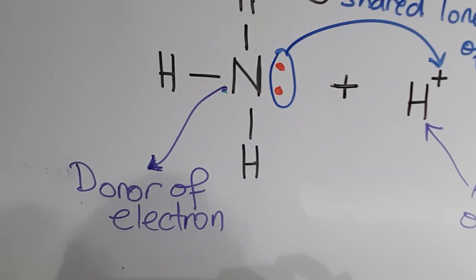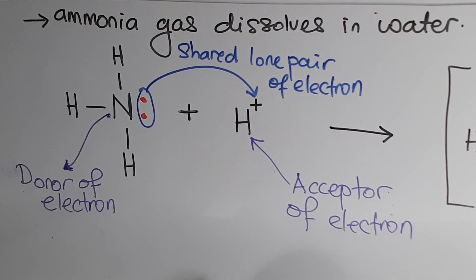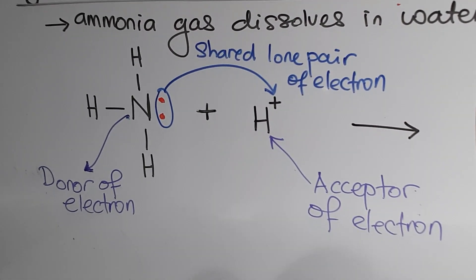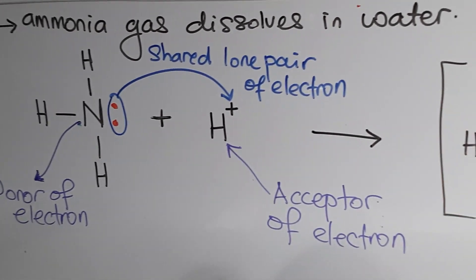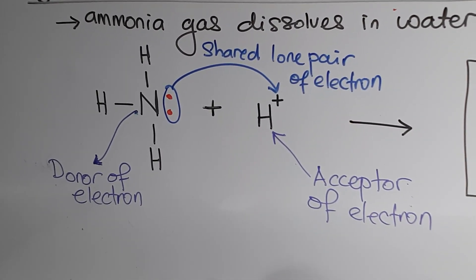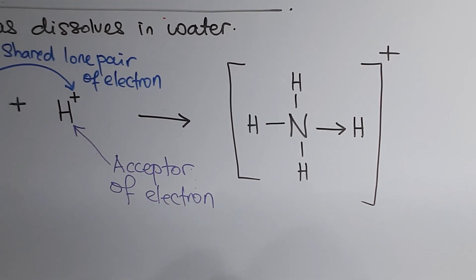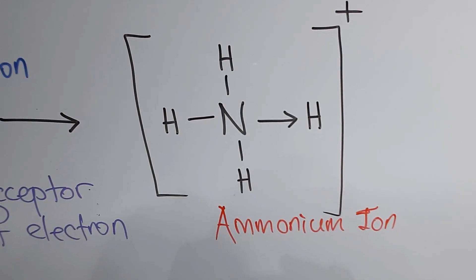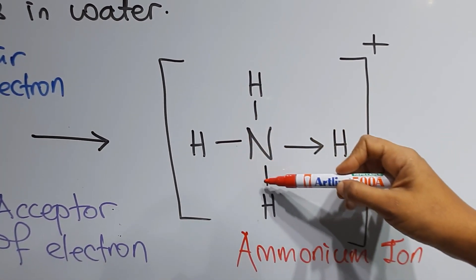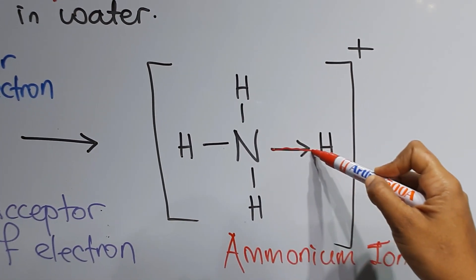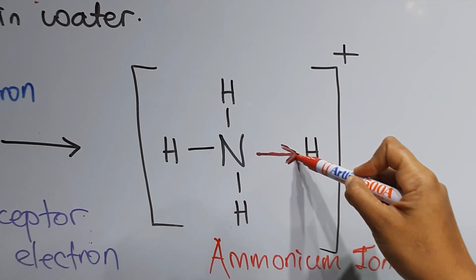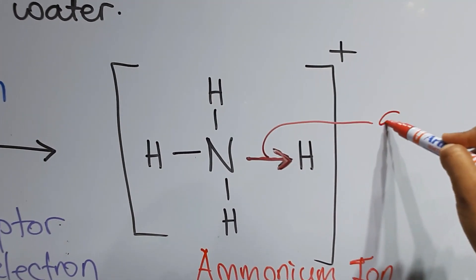The nitrogen atom contributes its two valence electrons — the lone pair — to be shared with the hydrogen ion, acting as the electron donor in the formation of the dative bond. In return, the hydrogen ion receives the lone pair of electrons from the nitrogen atom, acting as the electron acceptor. This results in the formation of an ammonium ion. As you can see, three bonds are covalent bonds and one bond is the dative bond, formed by the two valence electrons contributed by nitrogen to hydrogen.